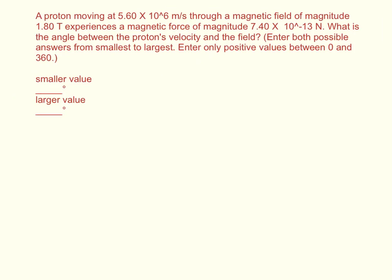A proton moving at 5.6 times 10 to the sixth meters per second through a magnetic field of magnitude 1.8 tesla experiences a magnetic force of magnitude 7.4 times 10 to the negative 13th newtons. What is the angle between the proton's velocity and the field?